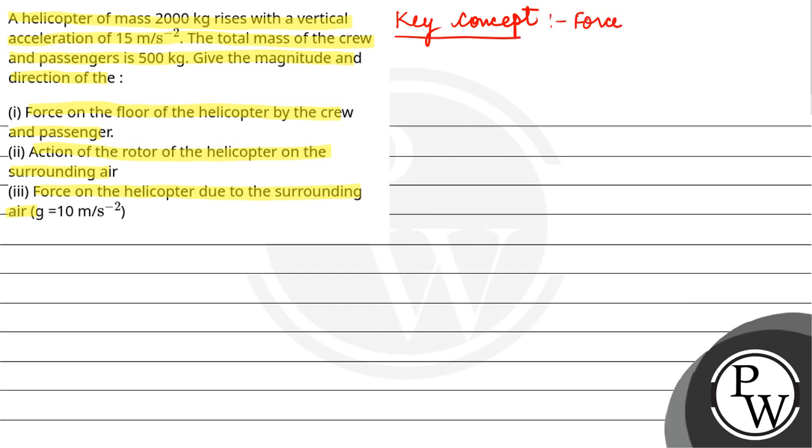Force is equal to mass into acceleration. F is equal to ma. Now here in this case you have a helicopter whose mass is 2000 kg.